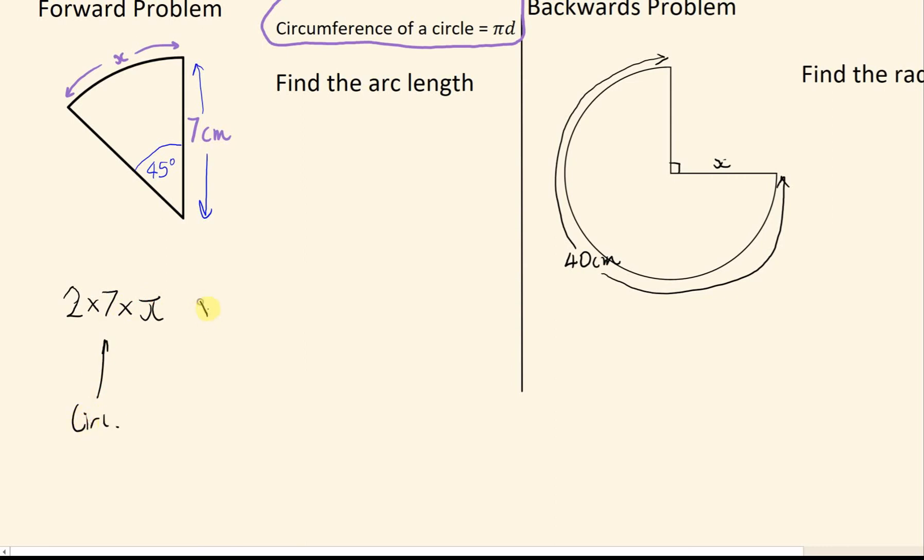And then we need to times that by what fraction of the circle we have. In this case, the fraction of the circle we have is given by how many degrees we have out of 360. And if you times this together, that will give you x, that will give you that arc length.